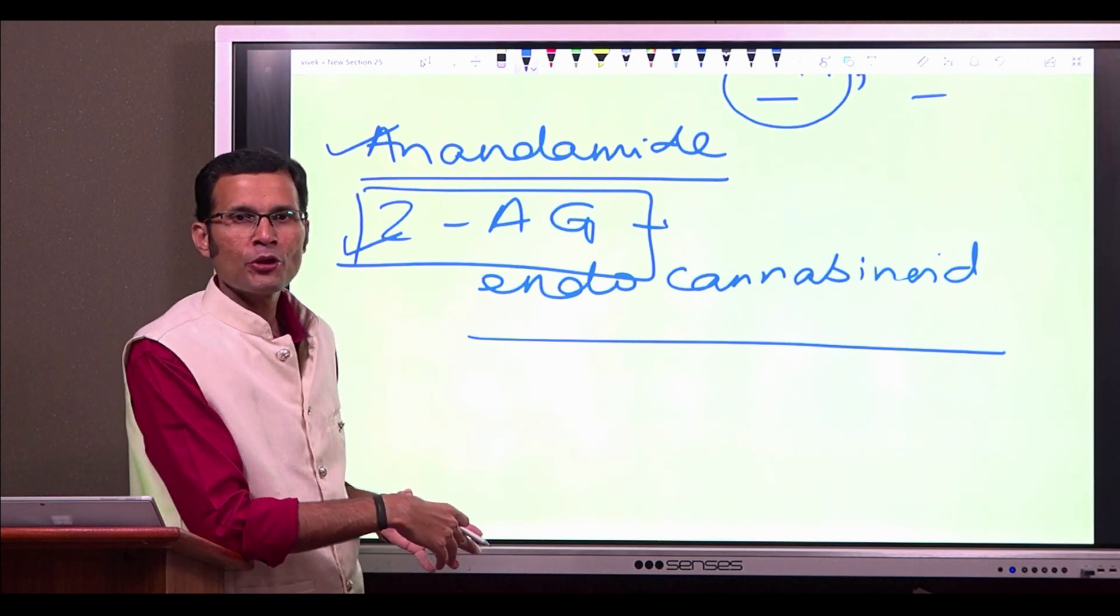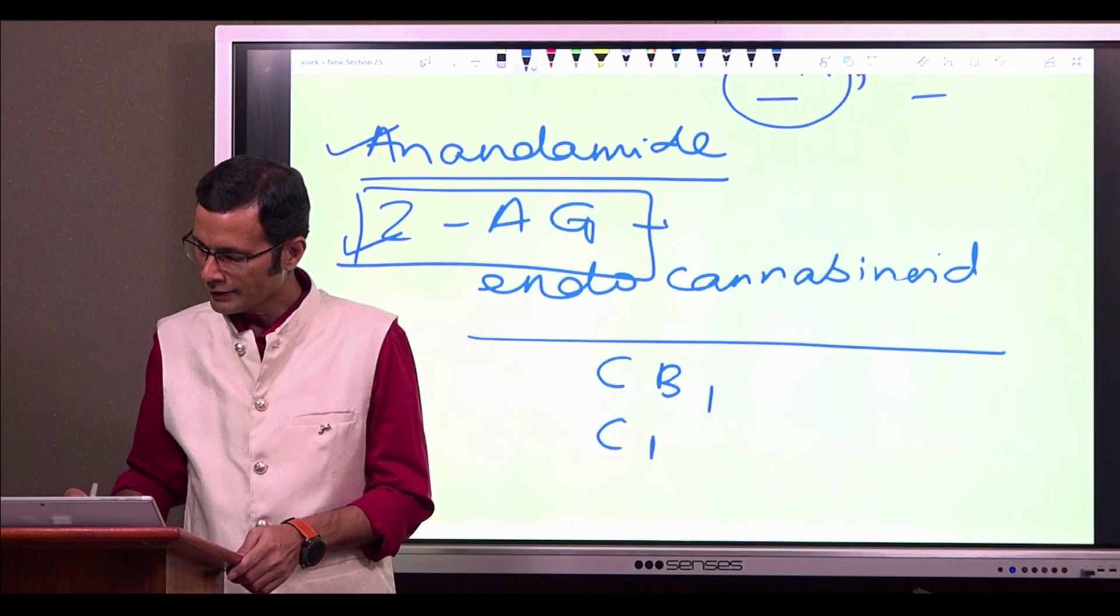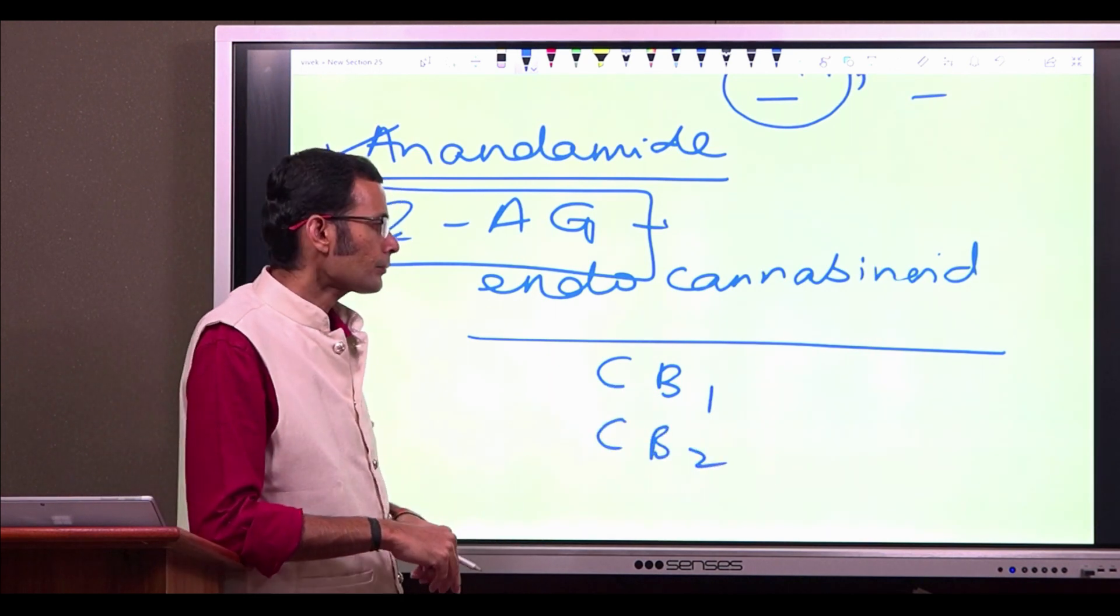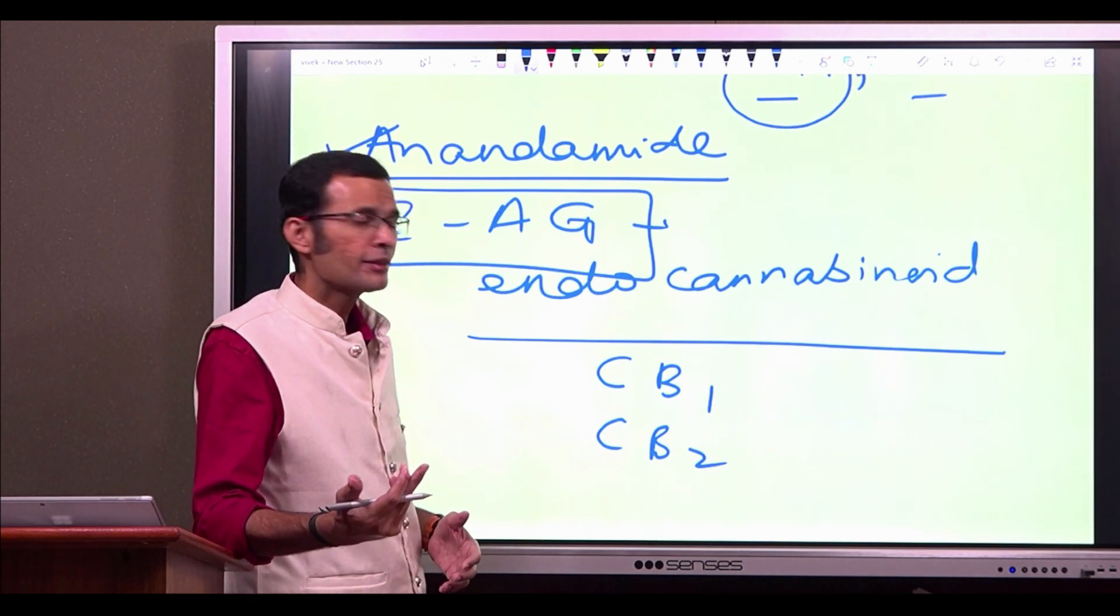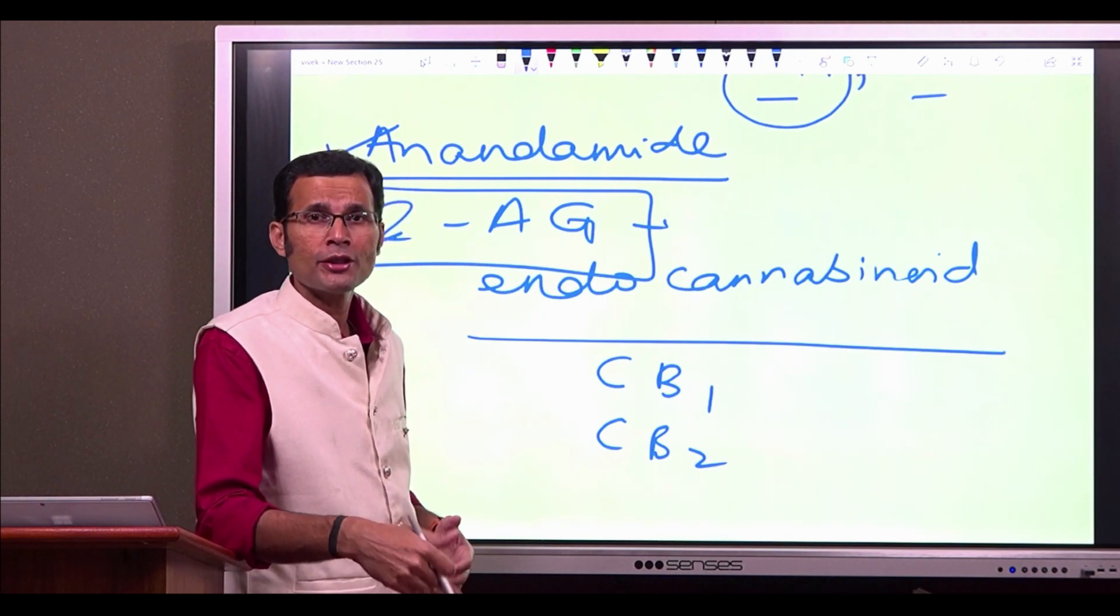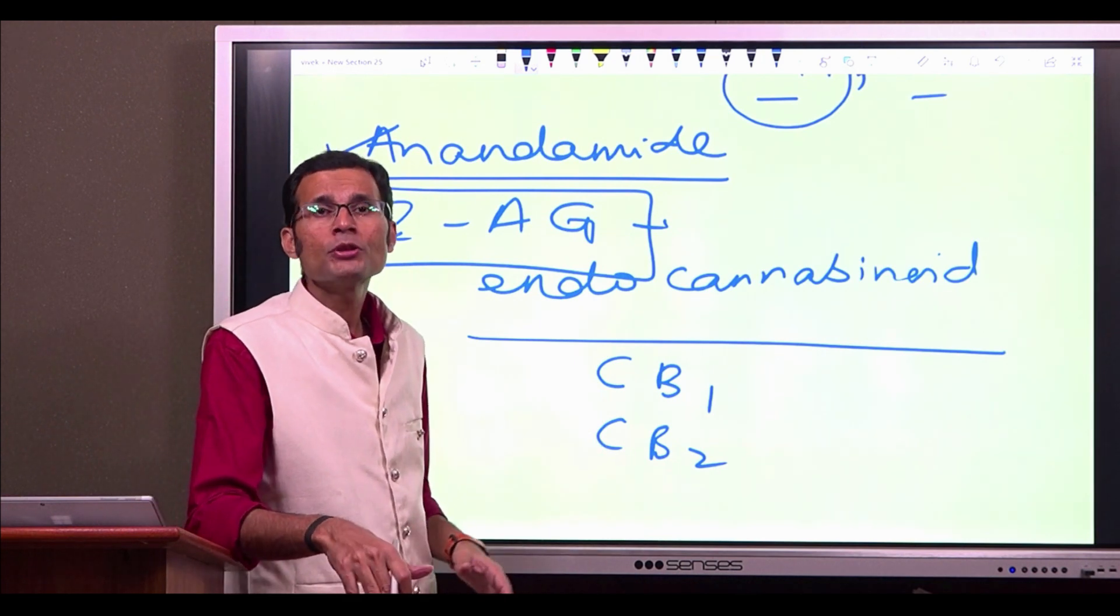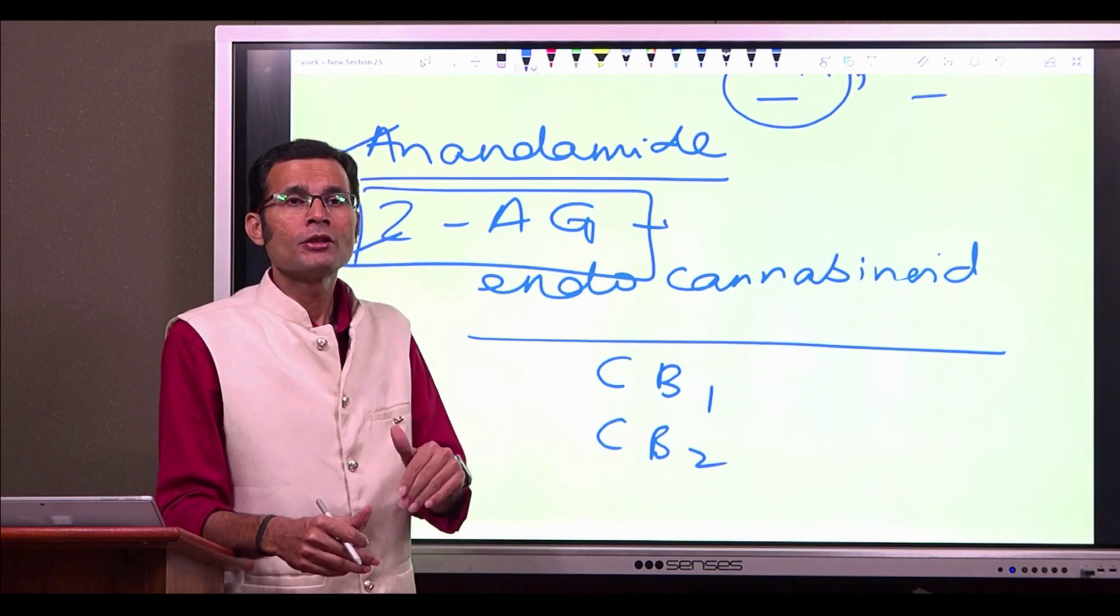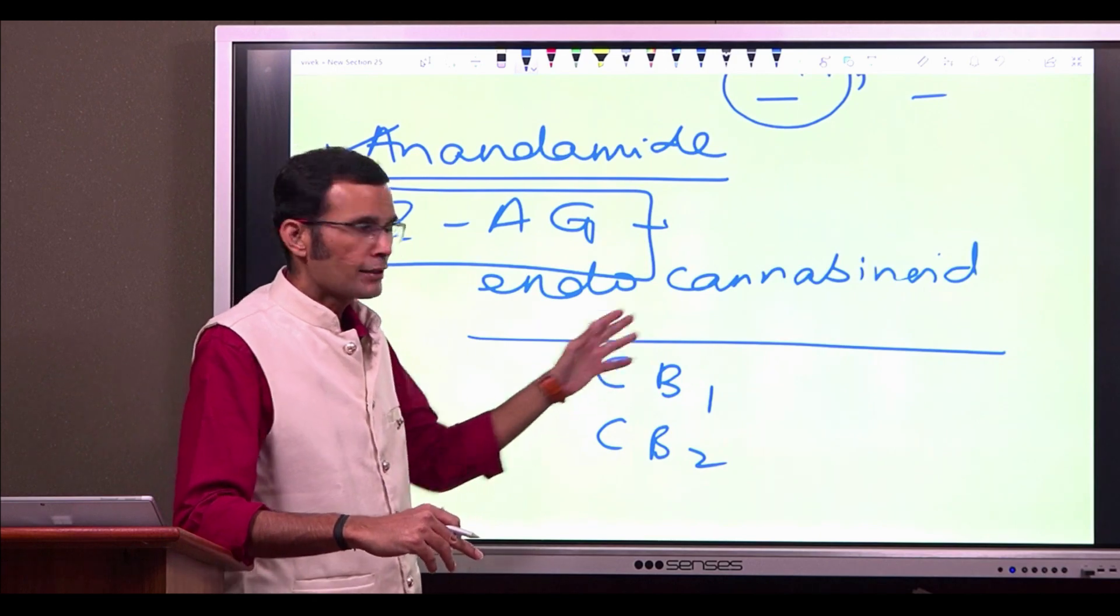So these endogenous cannabinoids, they act via CB1 and CB2 type of receptors, cannabinoids. The CB1 would mediate the euphoric effect of the cannabinoids. CB2 receptors would mediate the analgesic effect of the cannabinoids. So the drugs are being developed that will specifically target the CB2 receptors, so as to not have the euphoric effect, but produce the analgesic effect of the cannabinoids via these receptors.